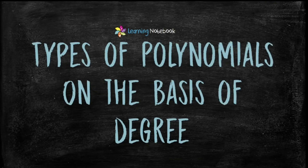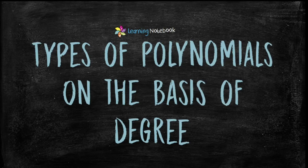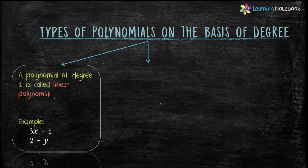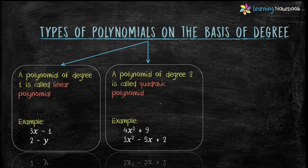The next topic is types of polynomials on the basis of degree. First is linear polynomial — a polynomial of degree 1 is called a linear polynomial. For example, 3x minus 1 and 2 minus y are linear polynomials because their degree is 1. Second is quadratic polynomial — a polynomial of degree 2 is called a quadratic polynomial. For example, 4x squared plus 9 and 3x squared minus 5x plus 2 are quadratic polynomials because their degree is 2.